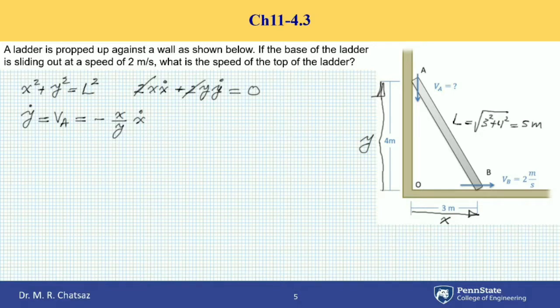If we plug in the given data for the position shown, VA will be minus X, which is 3, over Y, which is 4, times X-dot or VB.